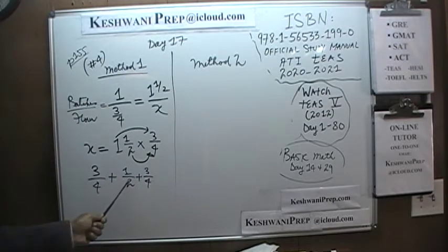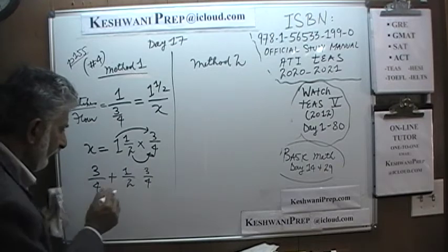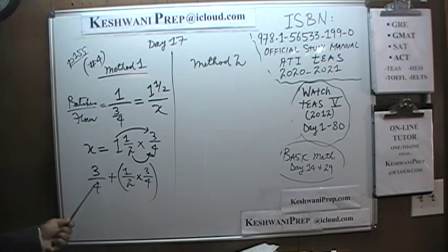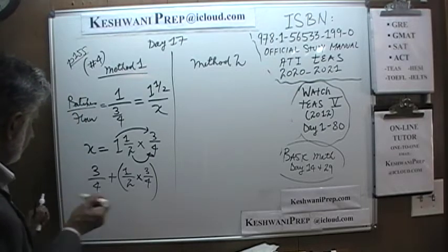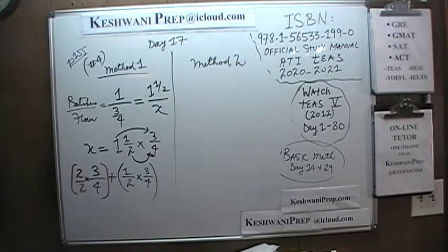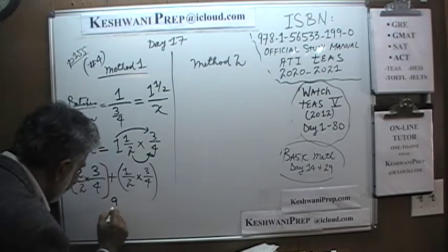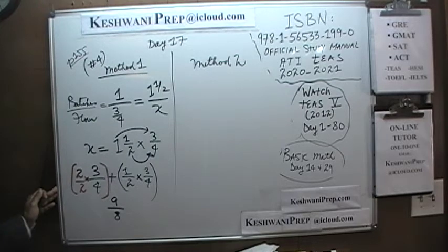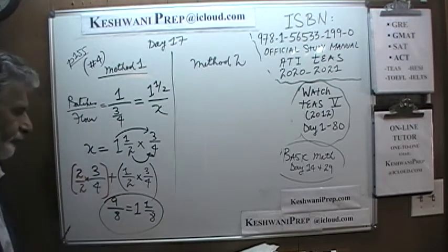So x equals three-quarters plus one-half times three-quarters. The problem is that this quantity has a denominator of 4, and this quantity has a denominator of 2 times 4. To add these two fractions we make the denominators the same by multiplying by two over two. Now both have a denominator of 8. Two times three is six, one times three is three — six plus three is nine. So the answer is nine-eighths cups of flour, which is the same as one and one-eighth. That's the answer.